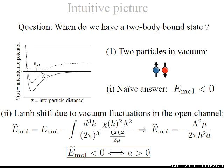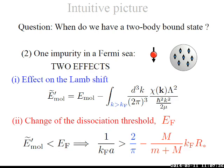Adding the effect of the Fermi sea, there are two effects: one is on the Lamb shift, which limits the integral to all k larger than kF, and the second is a change of the dissociation threshold from zero to the Fermi energy. Recalculating the molecular energy this way, the condition for a two-body bound state in the Fermi sea becomes 1 over kF a larger than 2 over pi, minus M over (m plus M) times kF R star, so the bound state is pushed towards negative values.